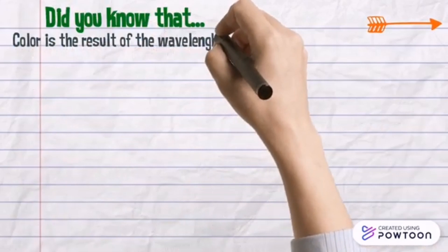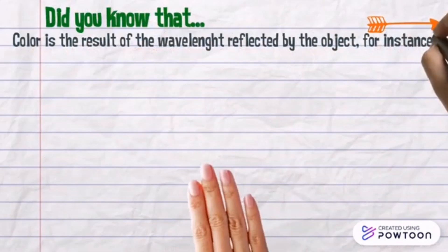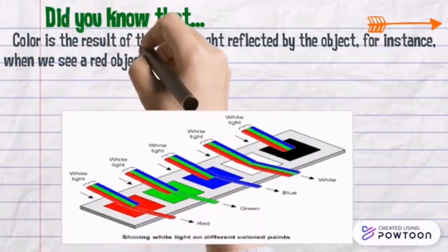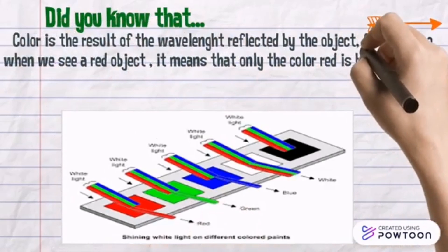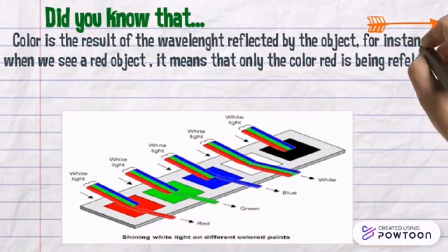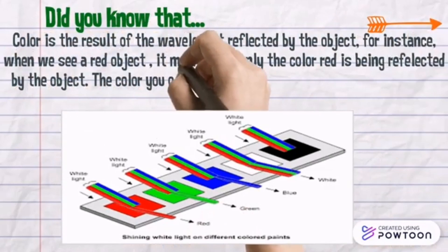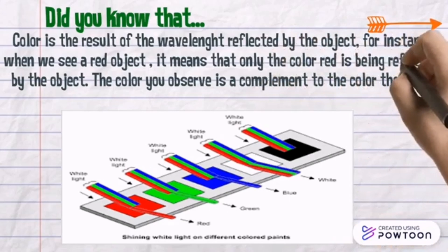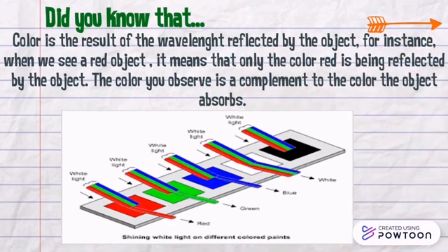Color is the result of the wavelengths reflected by the object. For instance, when we see a red object, it means that only the color red is being reflected by the object. The color you observe is a complement to the color the object absorbs.